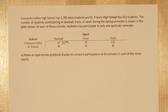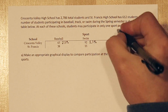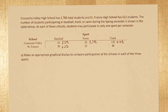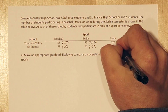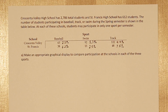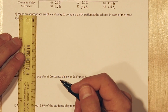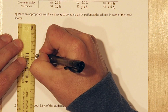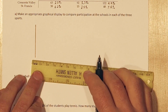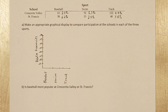Let's do that with the other five numbers. For our graphical display, we're going to go with a side-by-side bar graph to compare participation in these sports at the two schools.